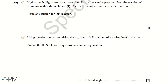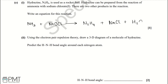Part E. Hydrazine, N₂H₄, is used as a rocket fuel and can be prepared from the reaction of ammonia with sodium chlorate(I), producing two other products. Writing the equation: NH₃ + NaClO → N₂H₄ + NaCl + H₂O. Balancing gives 2NH₃ + NaClO → N₂H₄ + NaCl + H₂O. To get the mark you need the full correct balanced equation.